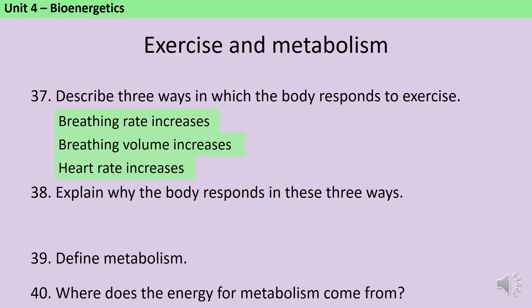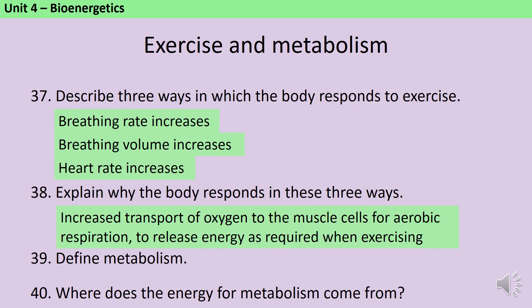The reason that your body responds in these ways is all linked back to aerobic respiration. Aerobic respiration releases 19 times more energy, so your body is very keen to keep on doing it for as long as possible, but it can't do it unless it has a plentiful supply of glucose and oxygen. By increasing the breathing rate and breathing volume, you're increasing the amount of oxygen in your blood. By increasing the heart rate, you're increasing the transfer of that oxygen around the body, getting it to the muscle cells quickly so they can carry on aerobically respiring and release the energy you need while exercising. It's really important in your answer to talk about the transport of oxygen, aerobic respiration, and that the point of aerobic respiration is to release energy.